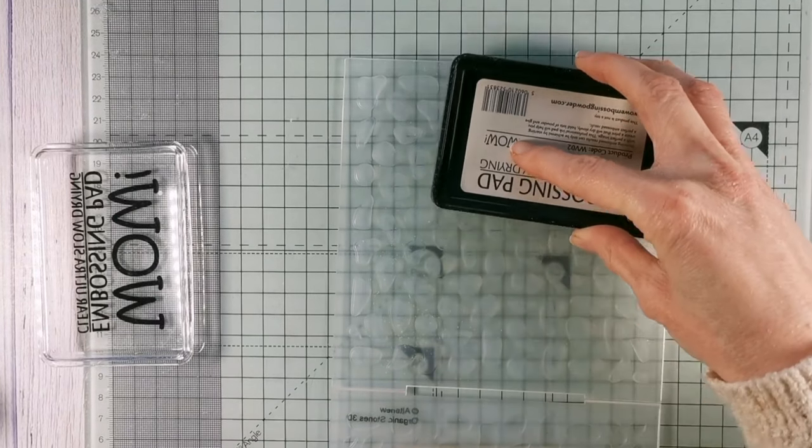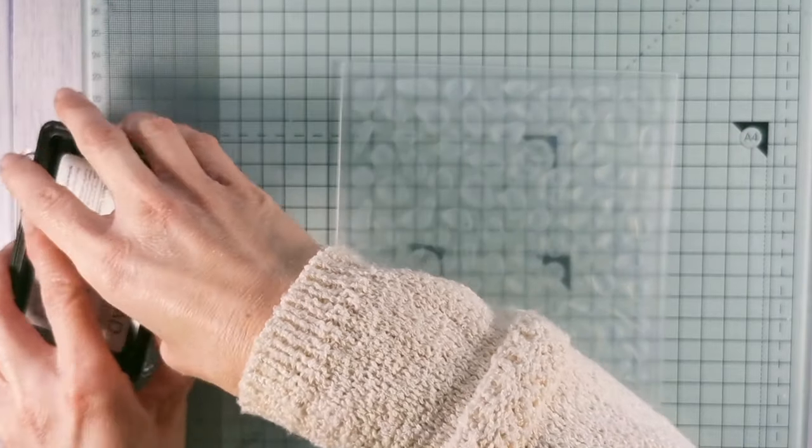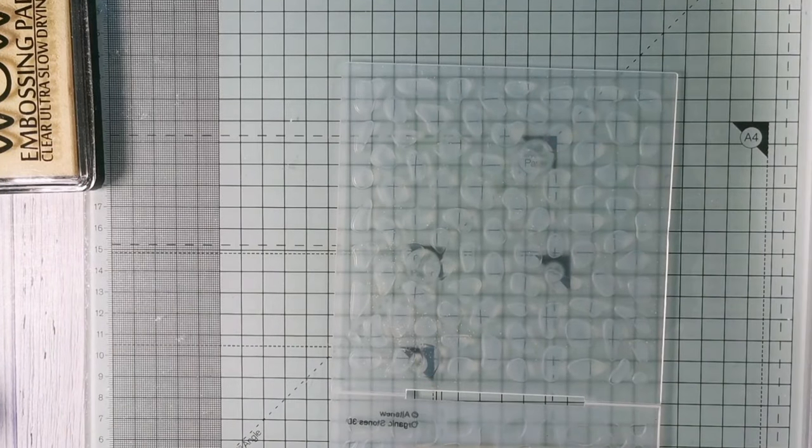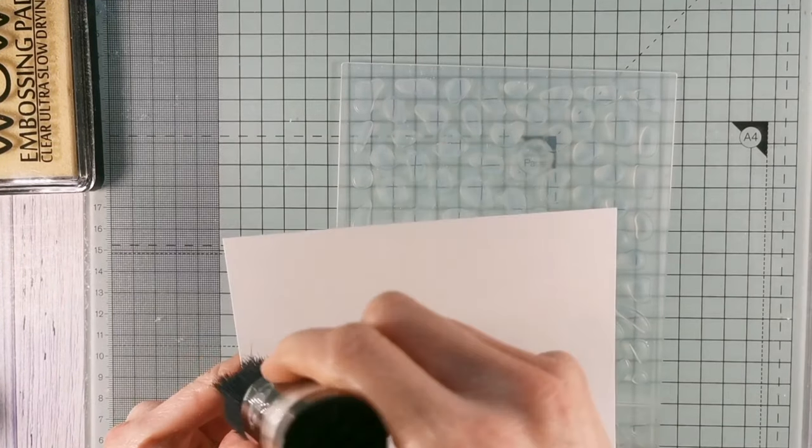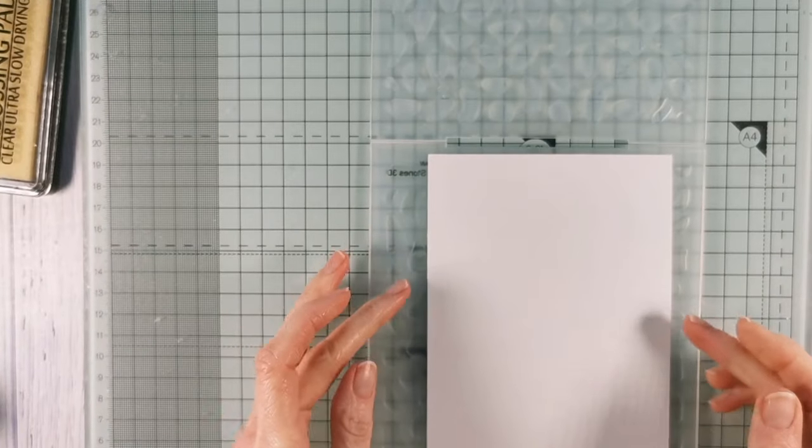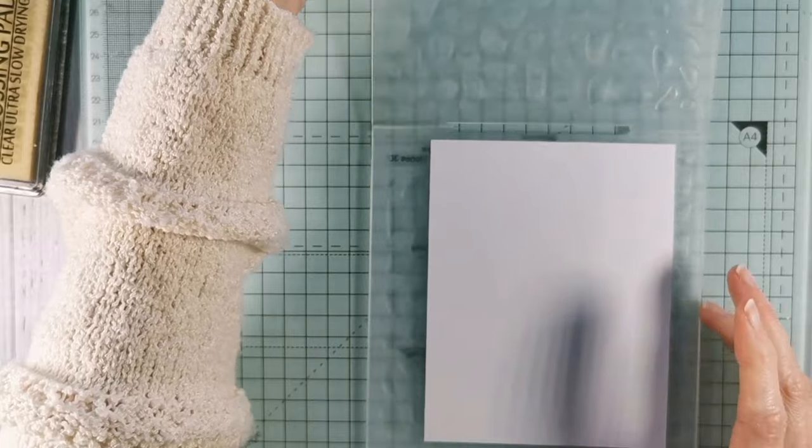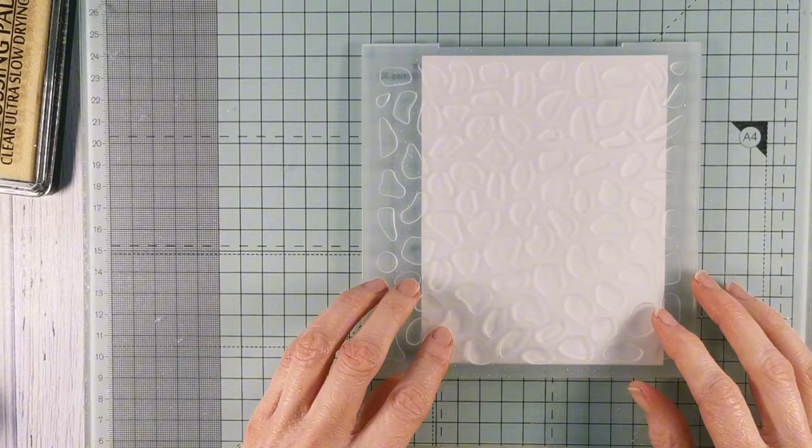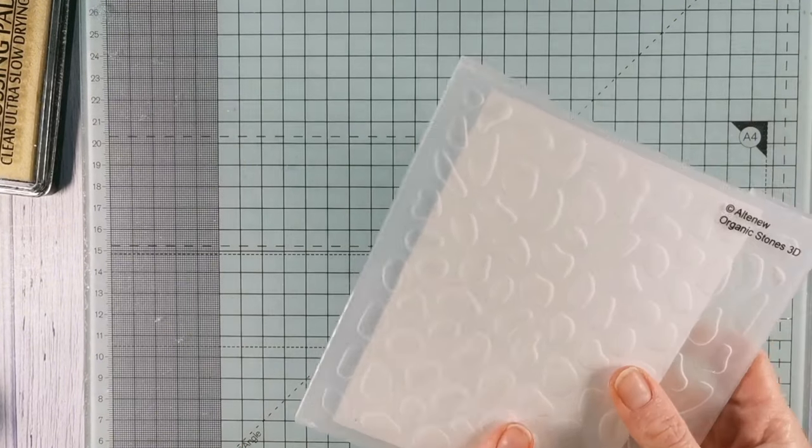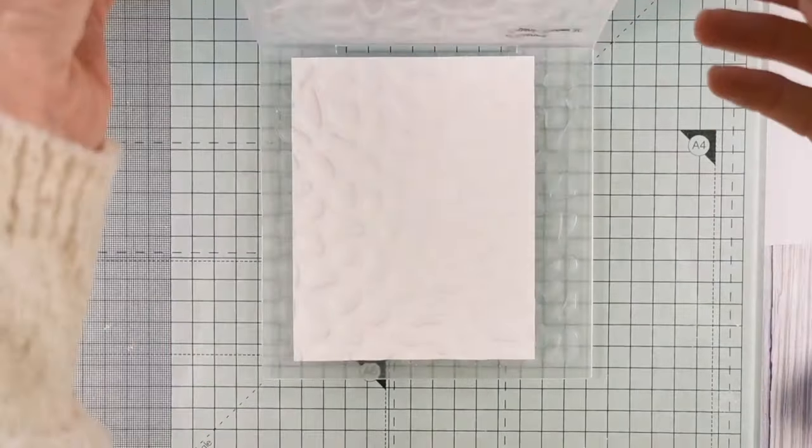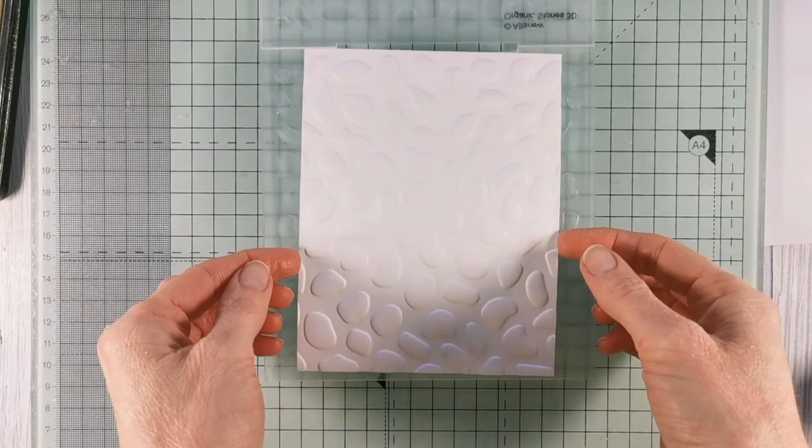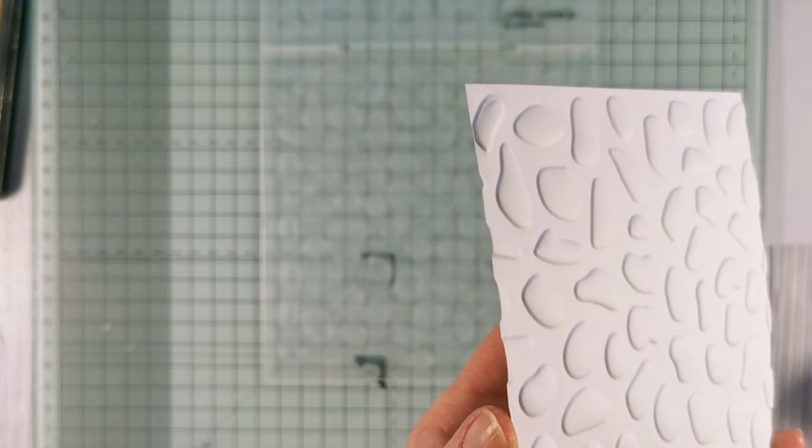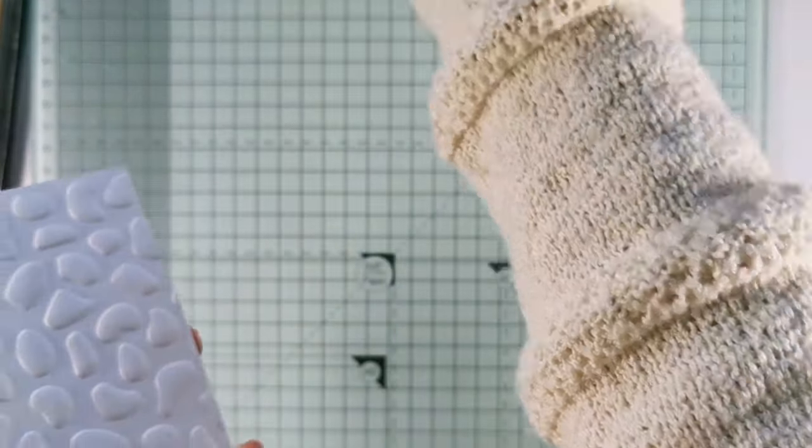So I'm just taking my WOW Embossing ink pad and I'm really lightly swiping it over the surface of the embossing folder. It's up to you whether you decide to emboss the embossed side or the debossed side, so the side that has the pattern protruding or the indent essentially. Today I have started off by inking up the embossed, i.e. the protruding side, and this just means that the embossing ink that I've put on the folder will get pressed down into those indents.